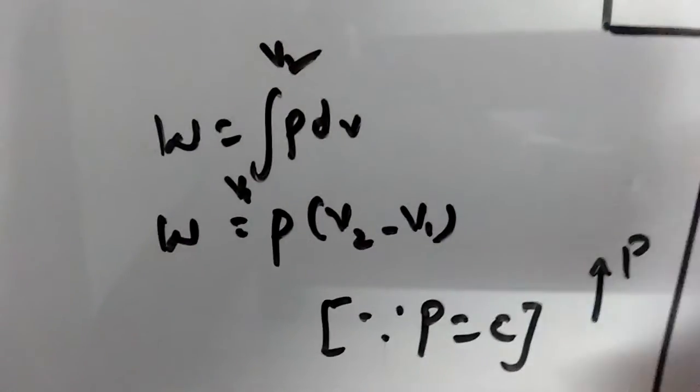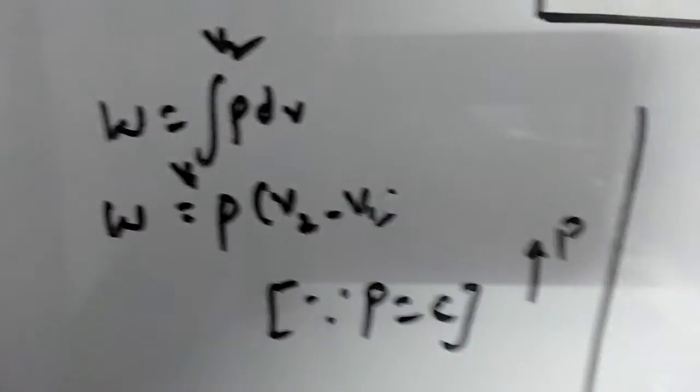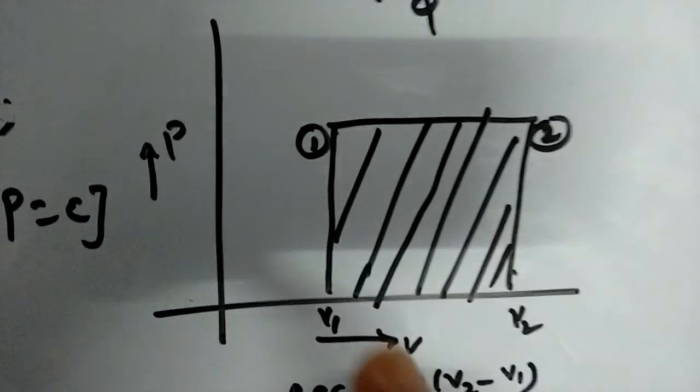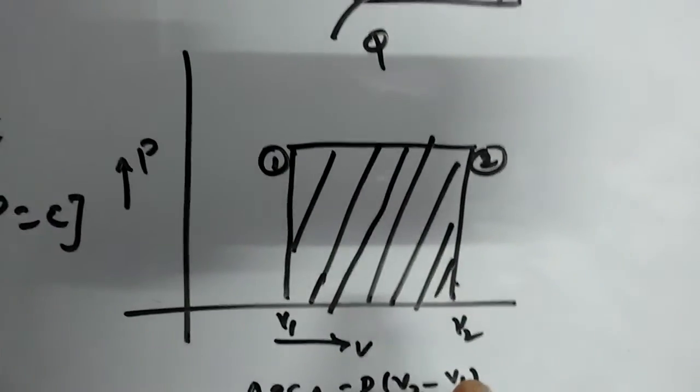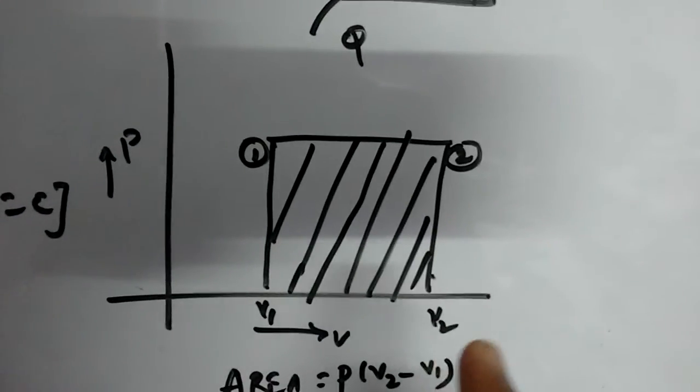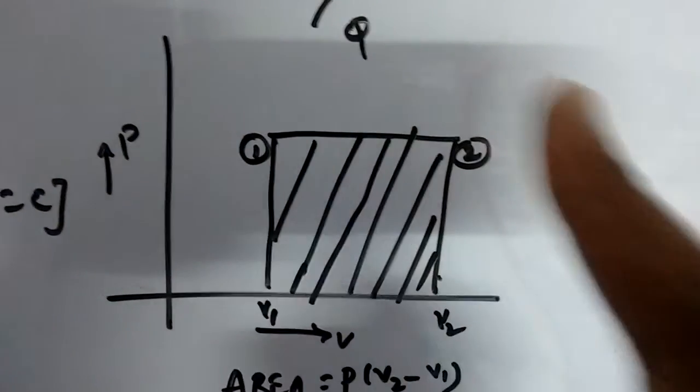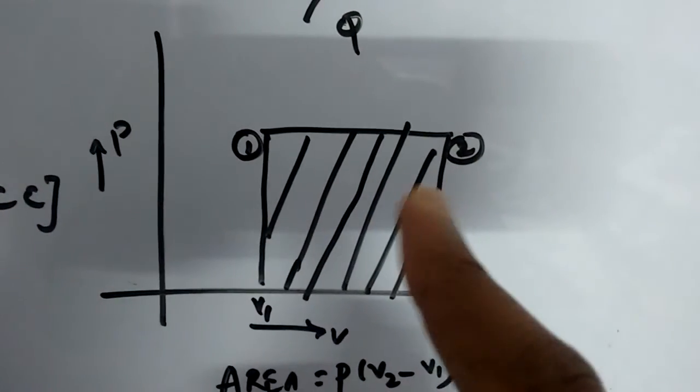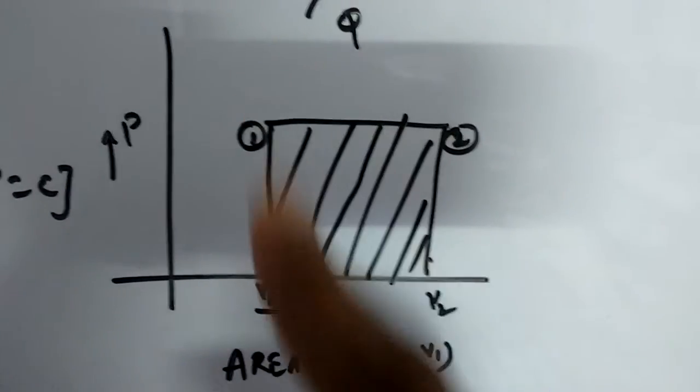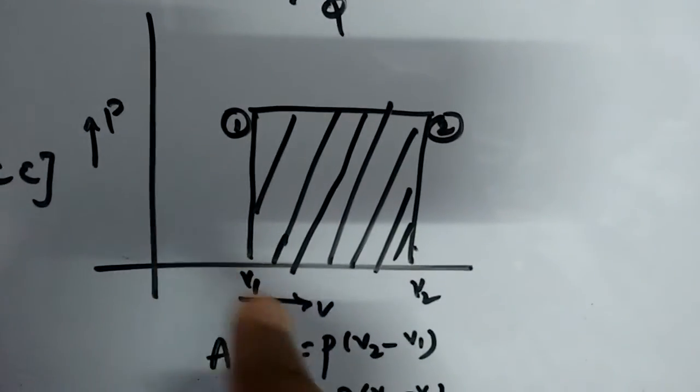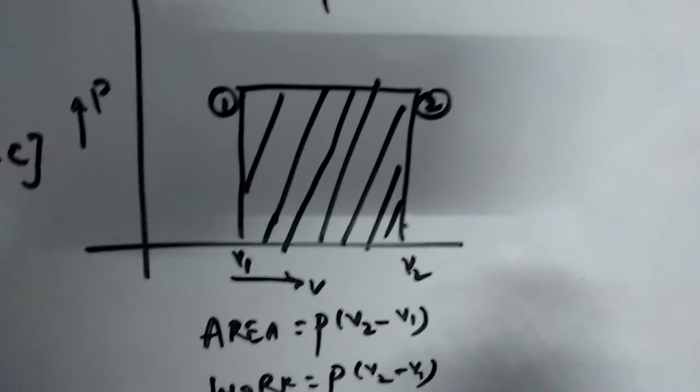If we plot the same process in a PV graph, then the state is changing from state 1 to state 2 under the supply of heat energy. In this case, the area under this curve is a rectangle, means P into V2 minus V1.